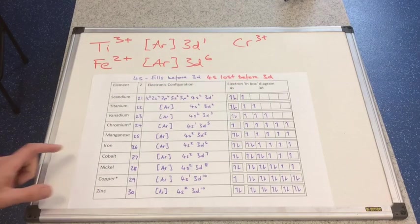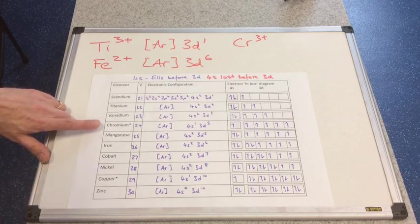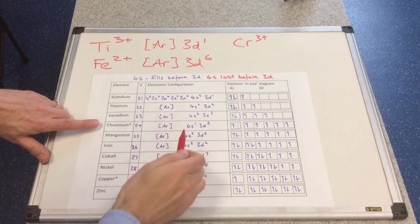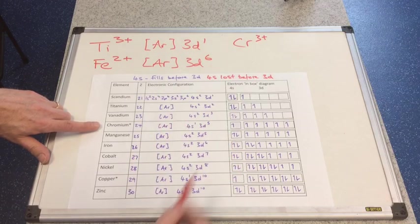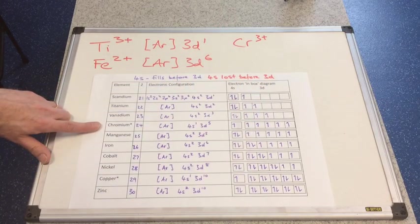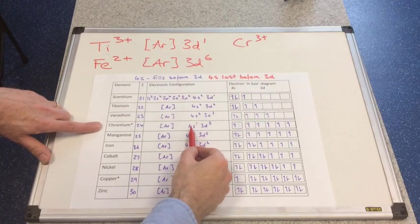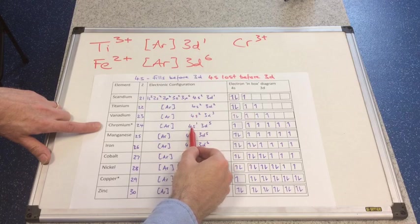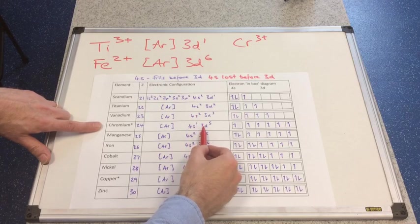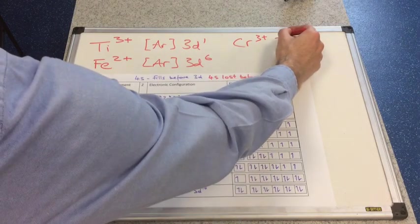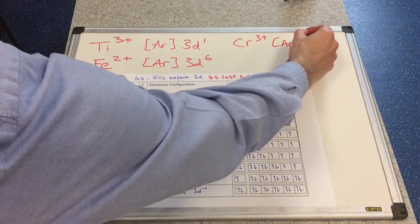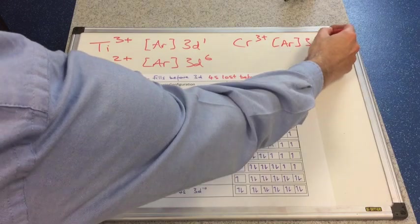We'll do one of the strange ones now. So chromium is one of the unusual ones. Argon 4s1, 3d5. So the chromium 3+ ion, we need to lose this 4s1 electron first, and then two more. So we're going to take this down to 3d3. So chromium 3+ will be argon 3d3.